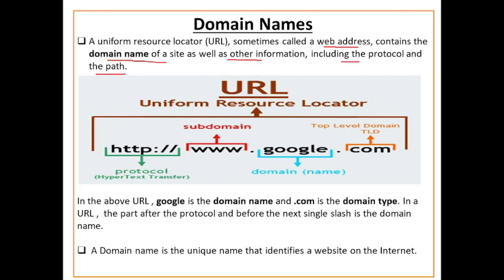You can see the example here — यहाँ पे एक URL है, uniform resource locator. उसका पहला part क्या है — protocol, HTTP. Then we have sub domain: www. Then google — यहाँ पे क्या है — domain name. And .com क्या है — top level domain.